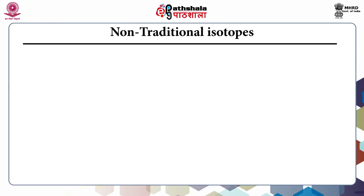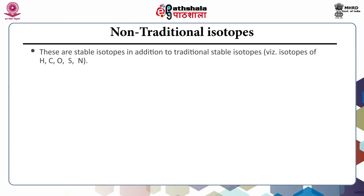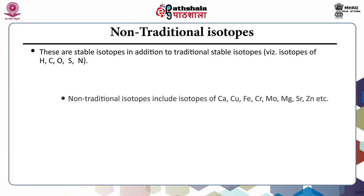Non-traditional isotopes are stable isotopes in addition to traditional stable isotopes. Non-traditional isotopes include isotopes of calcium, copper, iron, chromium, molybdenum, magnesium, and zinc.